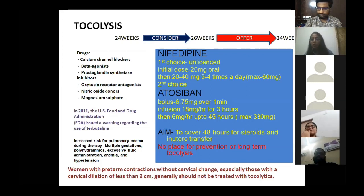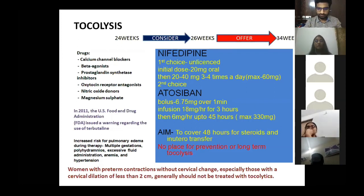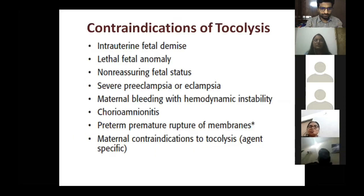The aim of tocolysis is not prevention — there is no role for long-term tocolysis in preterm labor. It is used solely to facilitate in utero transfer and to allow time for corticosteroid administration over 48 hours. The most commonly used tocolytic agent remains the beta-agonist subcutaneous terbutaline, but it is associated with pulmonary edema and should be avoided as much as possible.